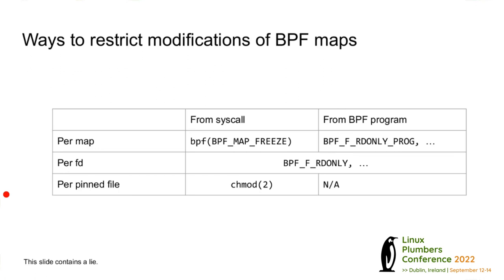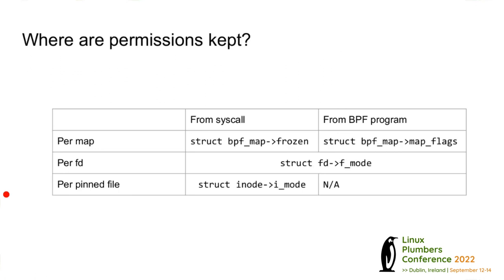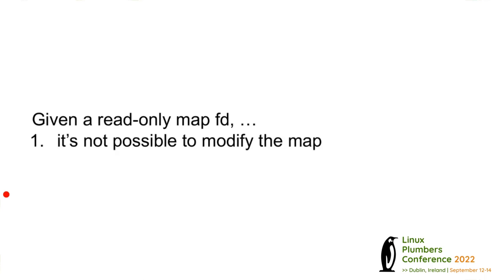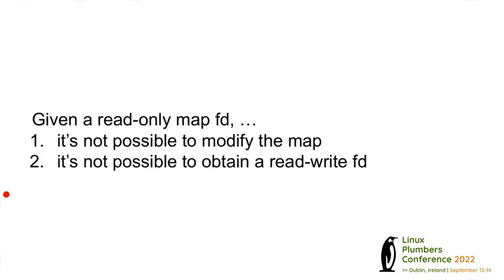You can also change permissions per pinned file. These permissions are kept in struct bpf_map for per-map ones, in the file descriptor struct for FD ones, and in struct inode. When we implemented 'tubectl status', we assumed two things about a read-only file descriptor: restriction one — it's not possible to modify the map; restriction two — it's not possible to derive a read-write file descriptor from that map. As you can probably guess, both of these are not true, unfortunately.